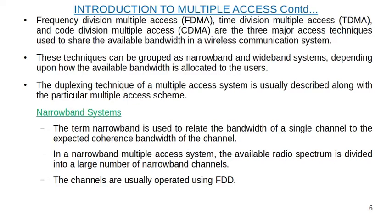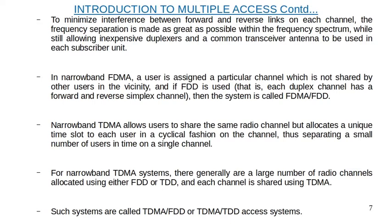The term narrowband is used to relate the bandwidth of a single channel to the expected coherence bandwidth of the channel, which will be less than or equal to the coherence bandwidth. In a narrowband multiple access system, the available radio spectrum is divided into a large number of narrow channels, usually operated using FDD. To minimize interference between forward and reverse links, the frequency separation is made as large as possible while still allowing inexpensive duplexers and a common transceiver antenna in each subscriber unit.